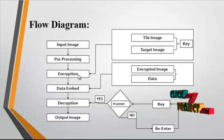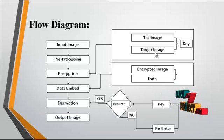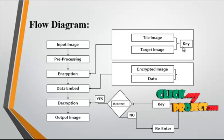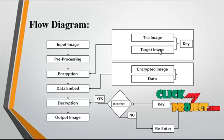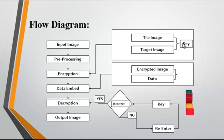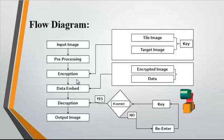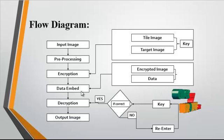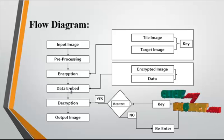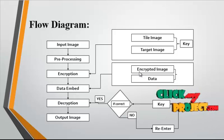After removing the noise, the pre-processed image undergoes encryption. In this encryption, two major elements are considered: the tile image and the target image. The tile image and target image are embedded into each other using a key. After embedding, the key is used to encrypt the image, and the encrypted image then undergoes the process of data hiding.